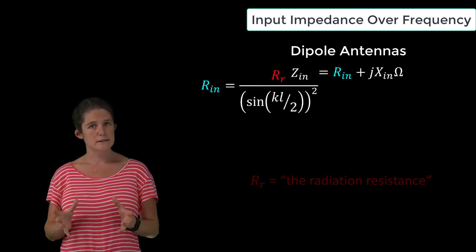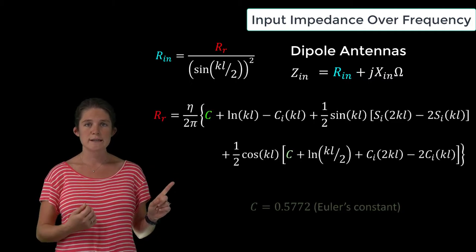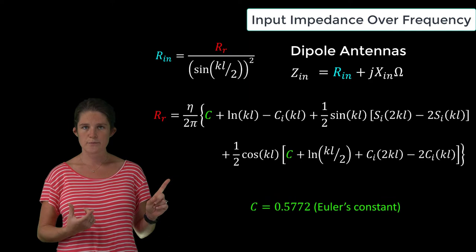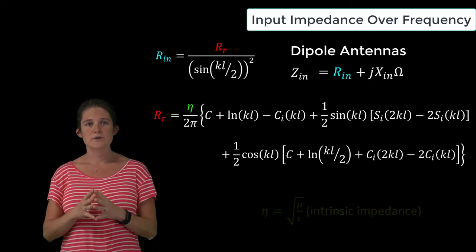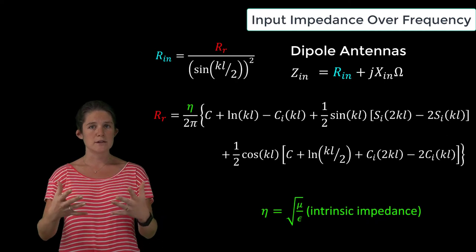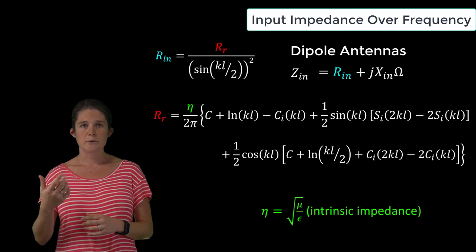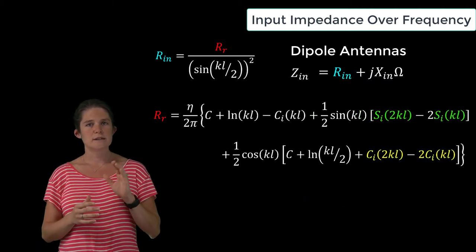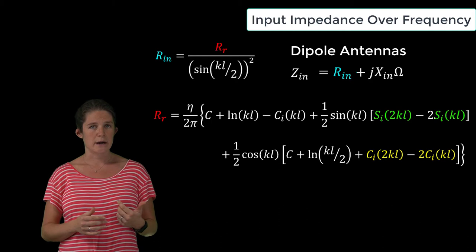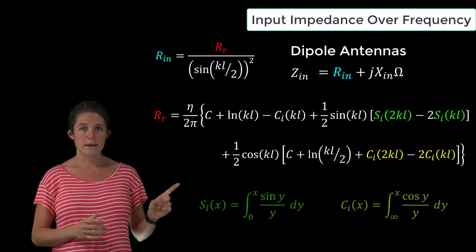The radiation resistance, in turn, is calculated from this equation, where C is Euler's constant, which is equal to 0.5772, η is the intrinsic impedance of the medium into which the antenna is radiating, so for free space this would be equal to 377 ohms, and the functions S_i and C_i are the sine and cosine integrals, which are defined here.